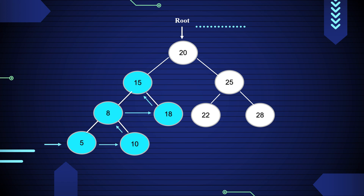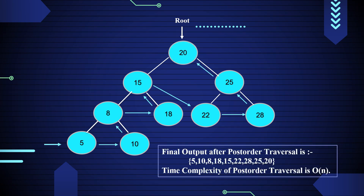Now move towards the right subtree of 20, i.e. 25, and it will also traverse in post-order. 22 is the left subtree of 25 and has no child, so print 22. Move towards the right subtree of 25; 28 is the right subtree of 25 and has no children, so print 28. Now print 25. Post-order traversal for 25 is completed. At last print 20, which is the root node of the given binary tree.